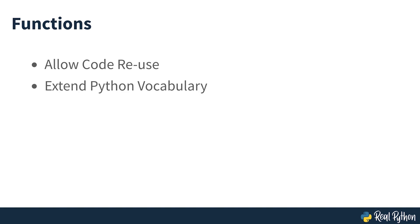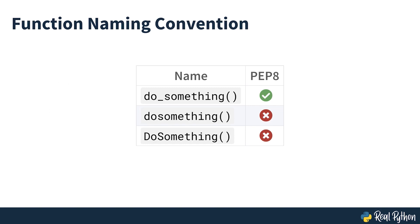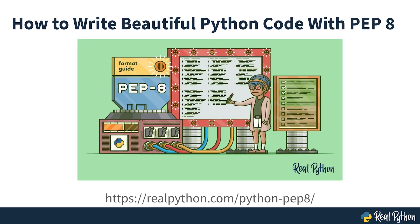When you use functions, you're extending your Python vocabulary. This lets you express the solution to your problem in a clearer and more succinct way. In Python, by convention, you should name a function using lowercase letters with words separated by an underscore, such as do_something, as seen on screen. These conventions are described in PEP8, which is Python's style guide, which you can check out in depth in this Real Python tutorial.